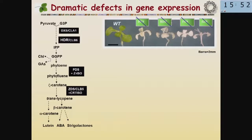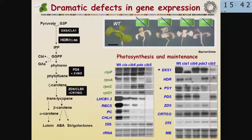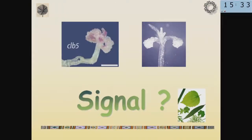We also found that this mutation importantly affects the expression of many, many genes compared to other mutants of the carotenoid biosynthetic pathway. In summary, we have a mutation in the carotenoid pathway that affects leaf development compared to other mutants, and that affects the expression of many nuclear-encoded genes. So we started to think whether this mutation was affecting the production of a signal that was communicating to the nucleus the developmental status of the chloroplast.